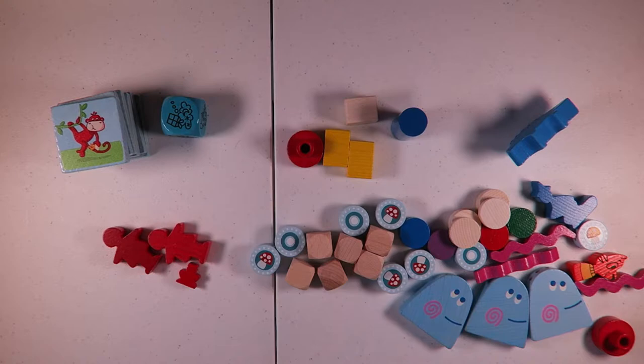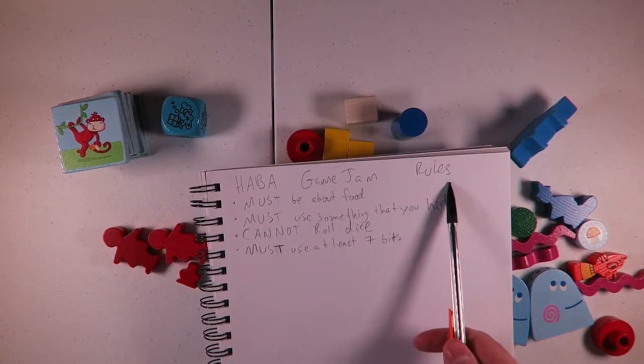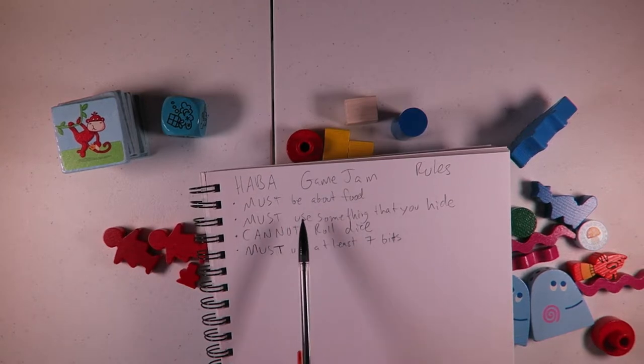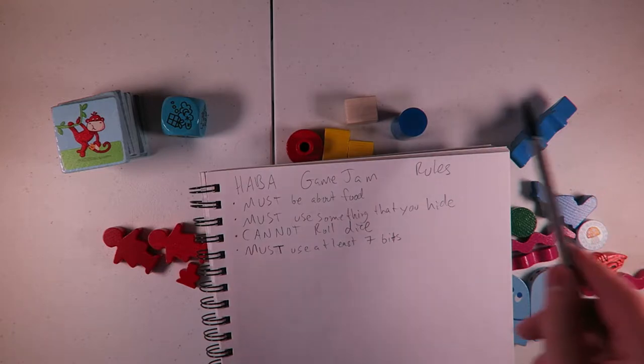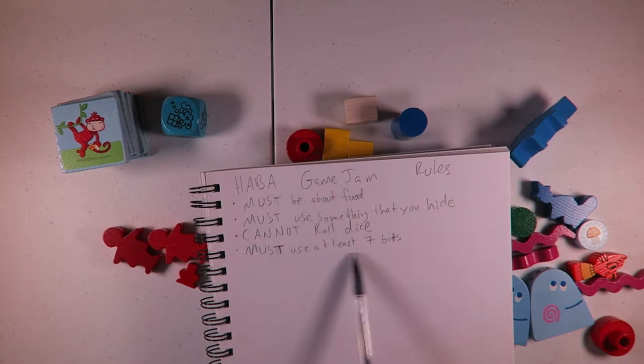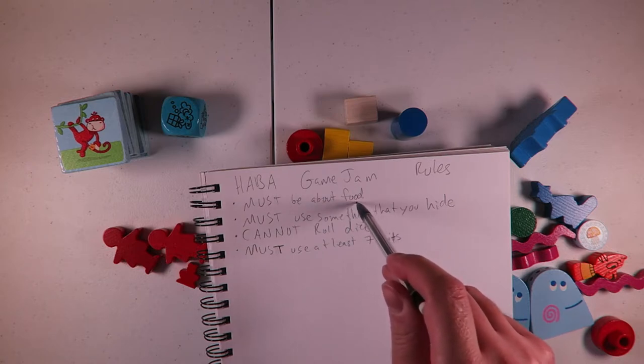Hello. Iggy Kid here again with another update. So we got the rules and everything. We had the kickoff meeting and I have an idea for a game. So I'm going to show you my current idea before I get to playtest it. So the rules that we've been given are thus. Habba game jam rules. It must be about food in some way. It must use something that you hide. You cannot roll dice. They did clarify you can use dice. You just cannot roll dice.